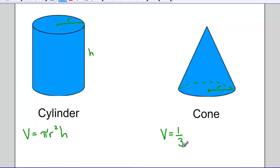Which means the volume of the cone is one-third times the volume of a cylinder, one-third times pi r squared times h.